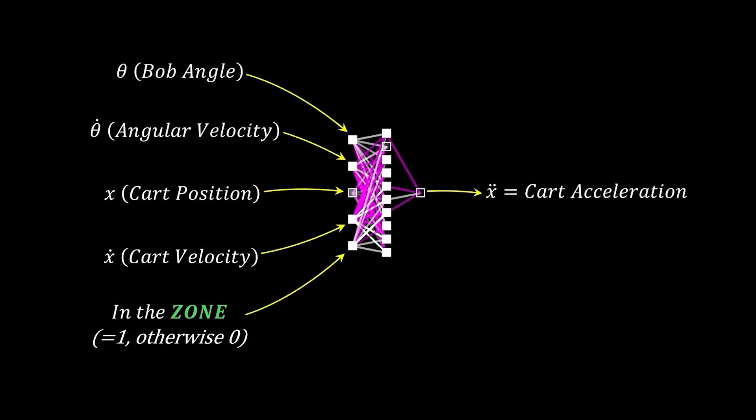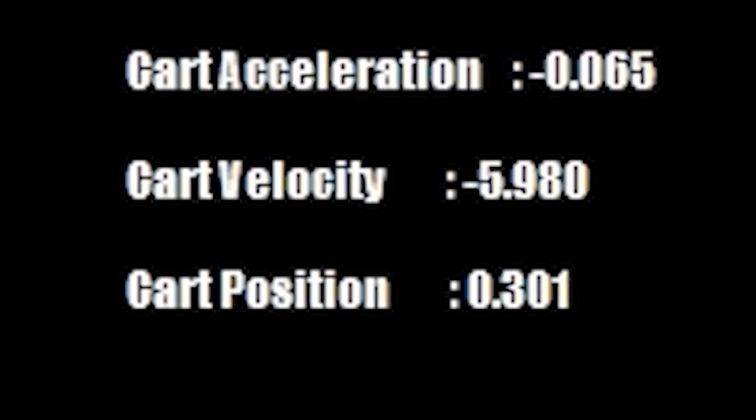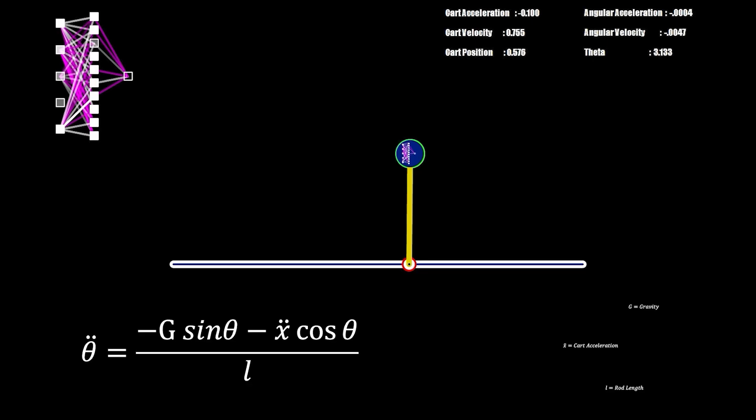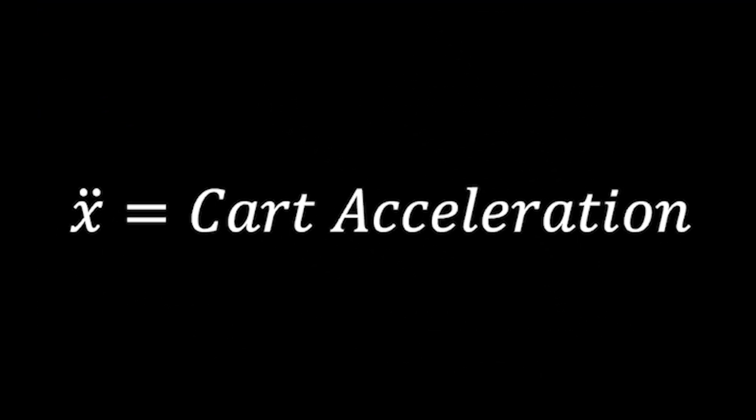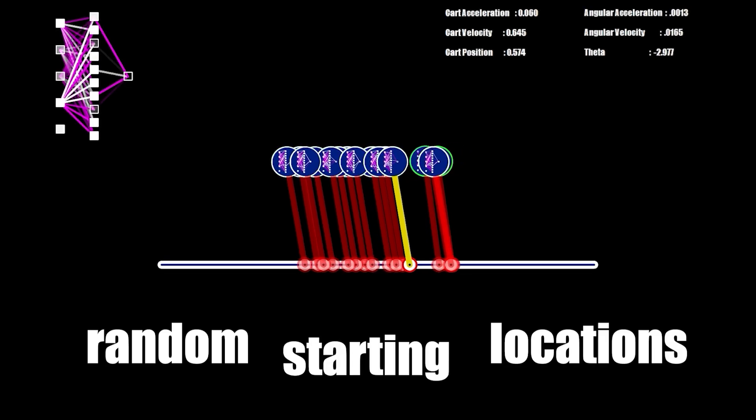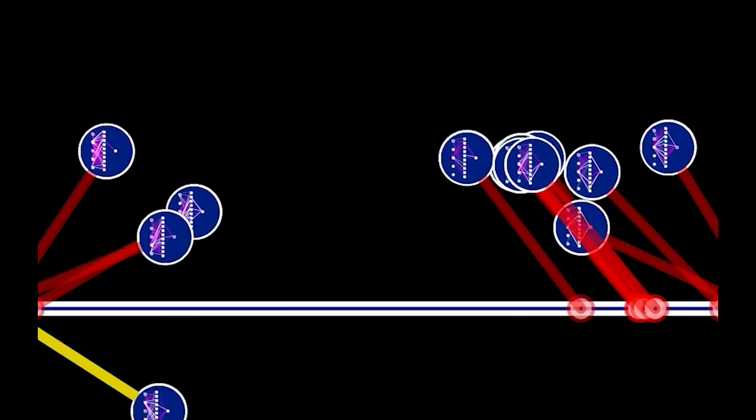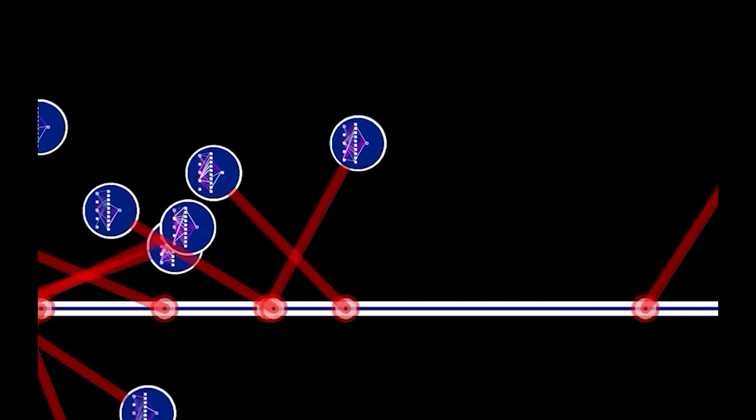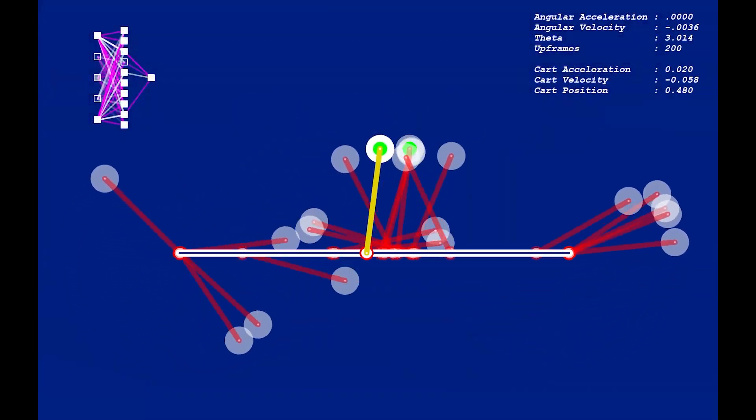The output from the network is simply the cart acceleration which gets added to its velocity, which in turn is used to update the position of the cart on the track. It's also a component of the formula which is used to determine the angular acceleration of the pendulum bob at any moment in time. I would also normally use some random element in the starting locations of the networks, a small offset to the normal for example so they're not exactly vertical, as well as random positions along the track. I do this so the solution isn't locked to an exact starting position.